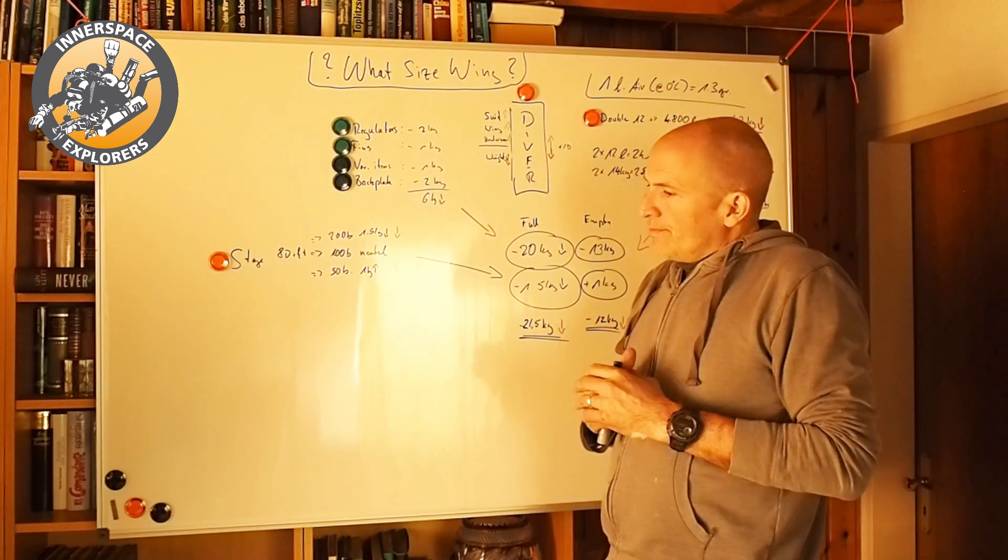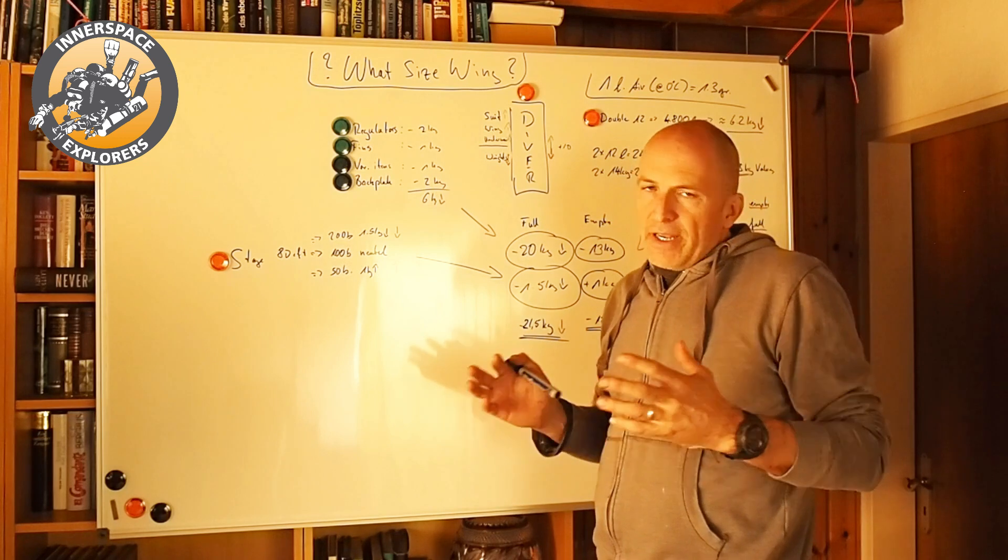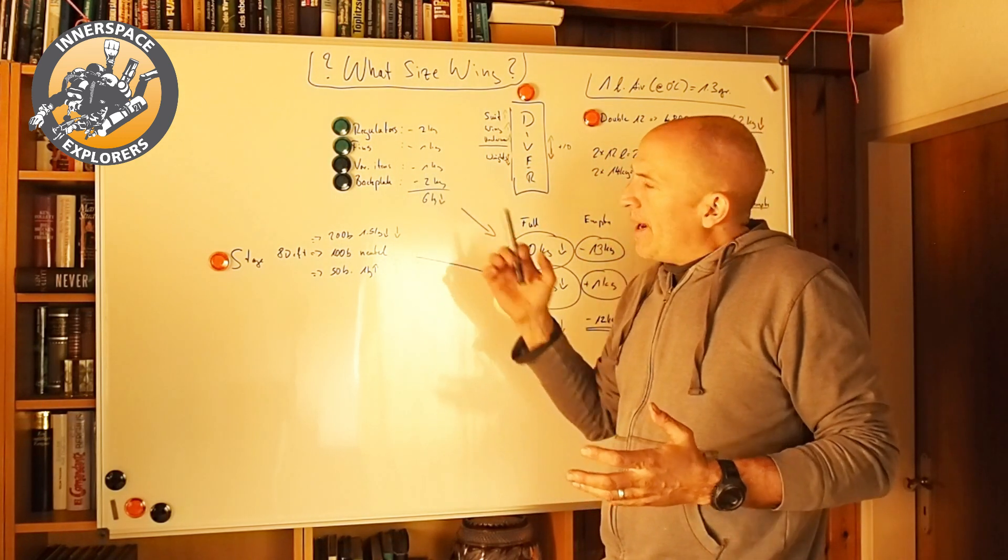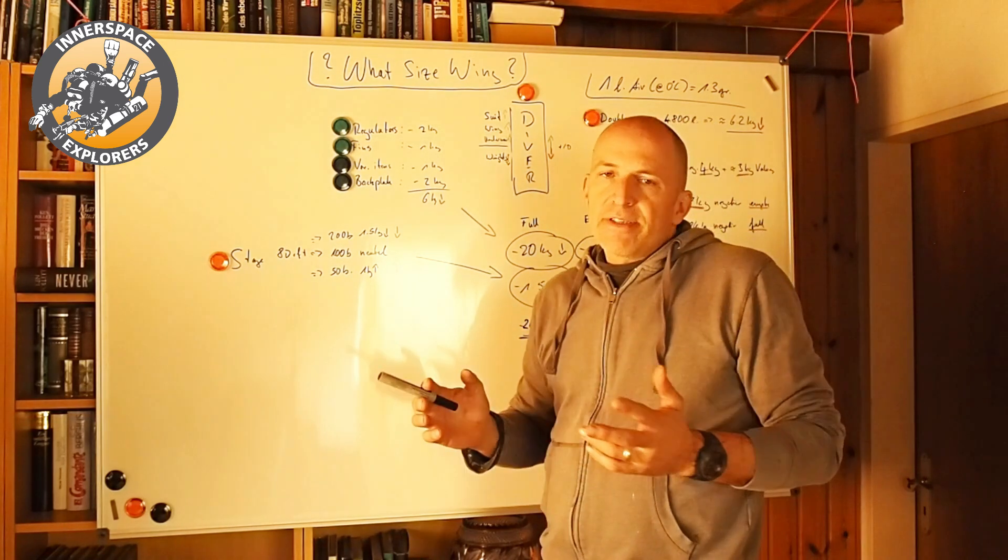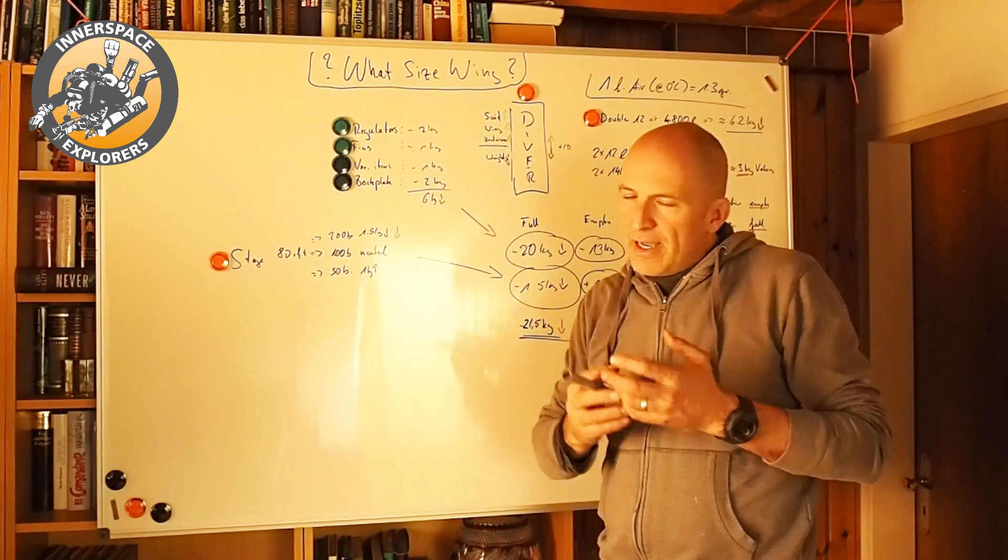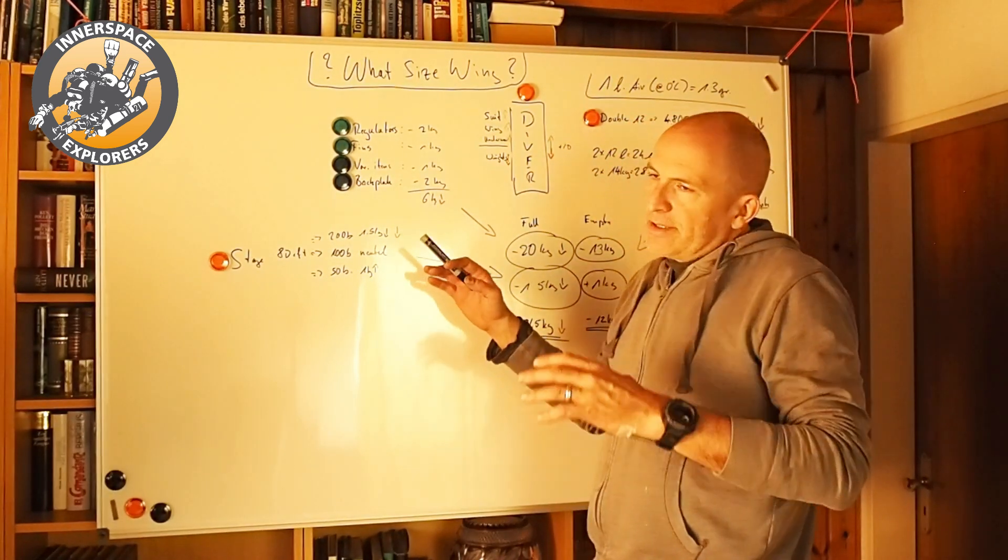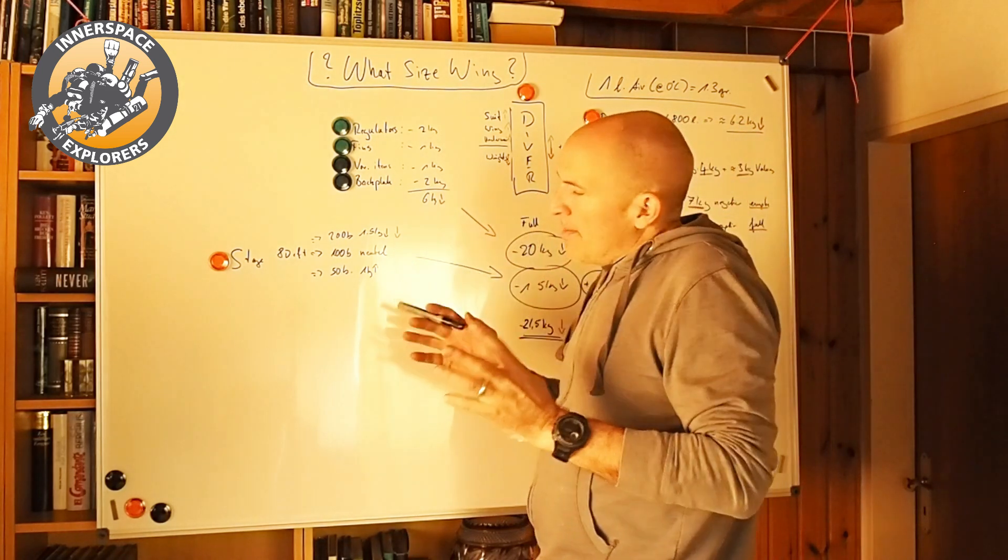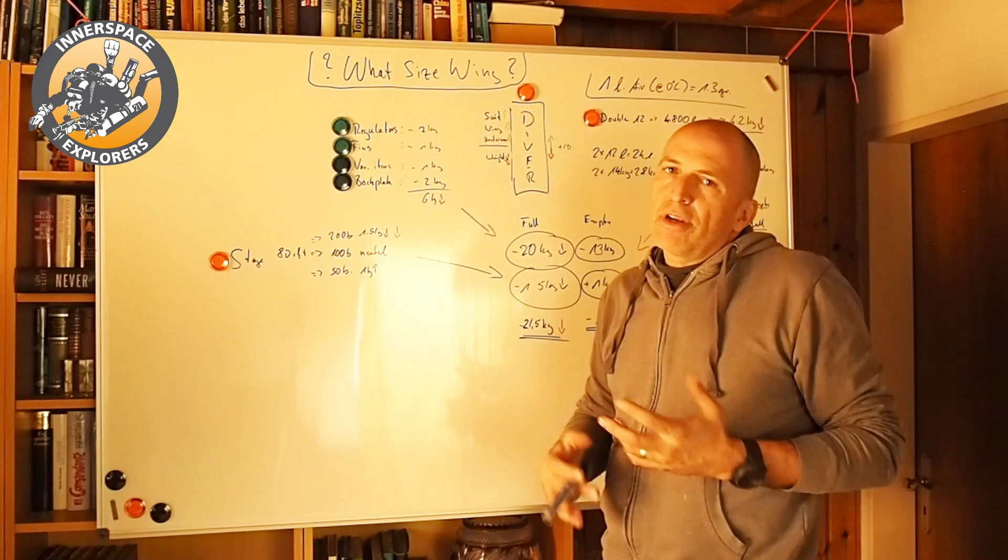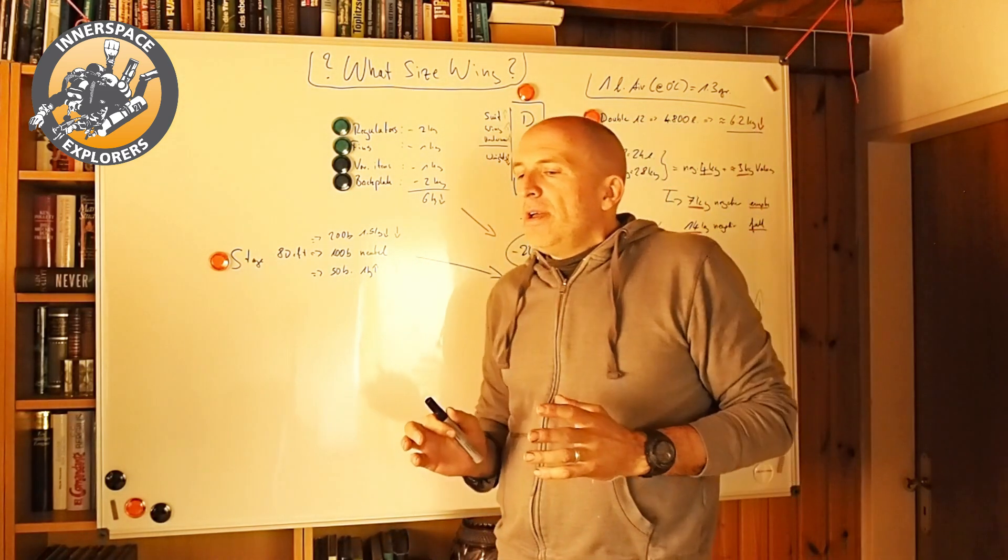Alright, so we have a couple of items that are always negative and that don't change. We have our regulators, fins, the backplate, and various items like spools, reels, wet notes, whatever you have in your pockets. This is all based on what I have here on a set of doubles.